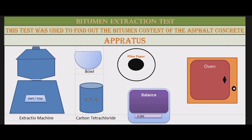The apparatus we have here is the bitumen extraction machine, bowl, CTC chemical carbon tetrachloride which we put in to extract the bitumen. We can use petrol for this, but the standard is CTC. We also need filter paper, balance, and oven. This apparatus should be used for this test.